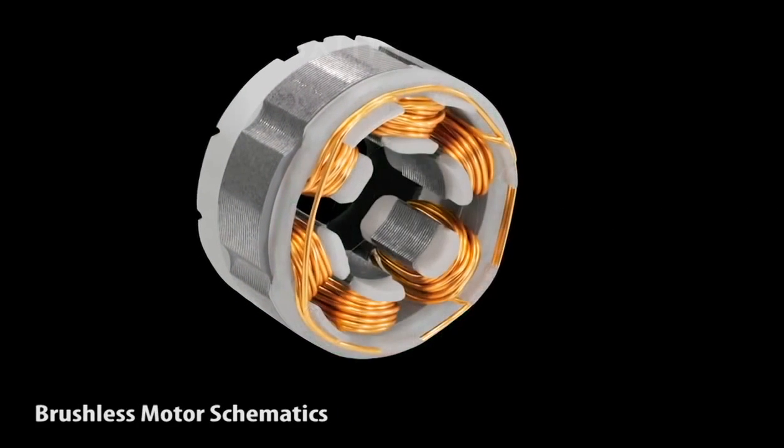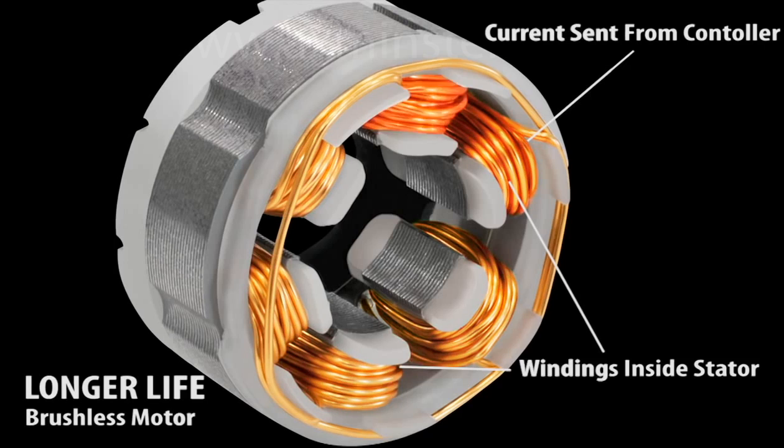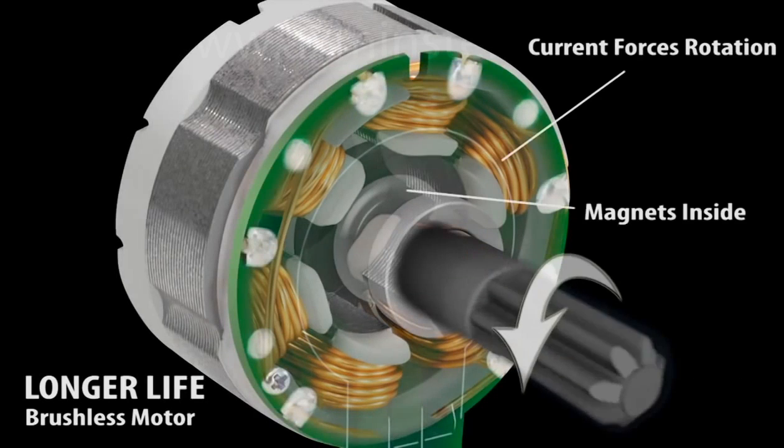This allows each revolution to run friction-free with maximum efficiency while running much cooler, and there are no carbon brushes to replace.